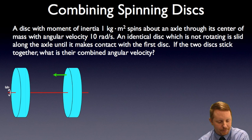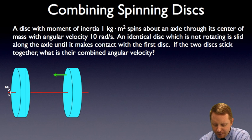Let's take a look at one more problem. We have a disk with some moment of inertia I, and let's say that I equals one kilogram meter squared. It spins about an axle through its center of mass with an angular velocity of ten radians per second. An identical disk which is not rotating is slid along the axle until it makes contact with the first disk. If those two disks then stick together, what is their combined angular velocity?